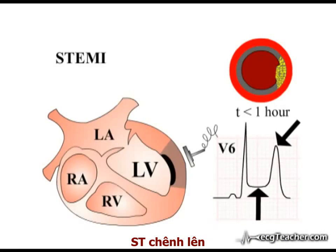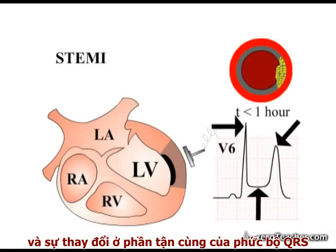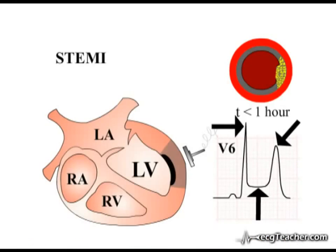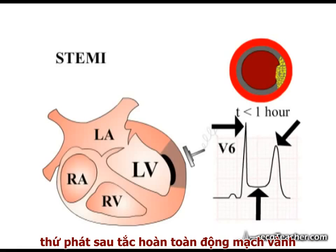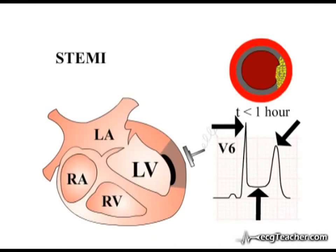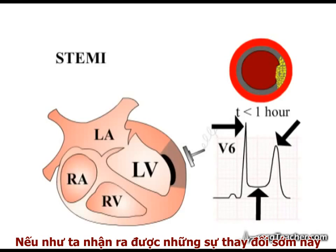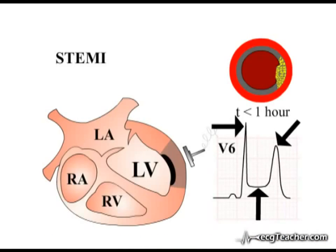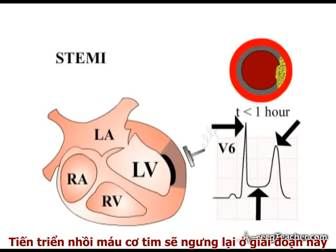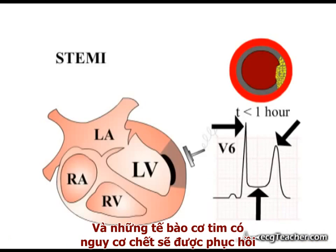Peaked T waves, ST segment elevation, and alterations to the terminal portion of the QRS complex are the early changes of acute myocardial infarction secondary to complete occlusion of a coronary arterial vessel. If these early ECG changes are recognized and the vessel reopened using either thrombolysis or direct coronary angioplasty, the progression of the infarction can be halted in its tracks and myocardium at risk of death salvaged.